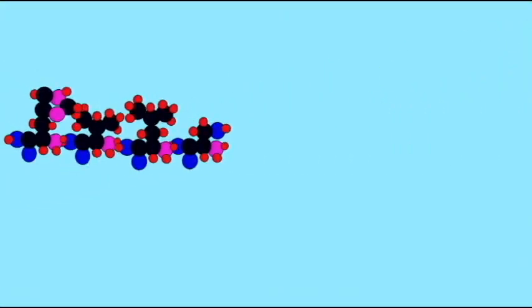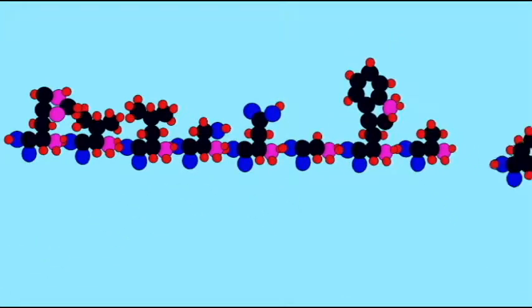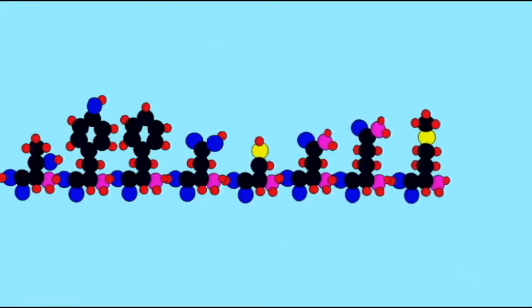These could be short chains. Oxytocin, for example, is simply eight amino acids in a row. Growth hormone is more than 190 amino acids in a row, while thyroid-stimulating hormone can be thousands of amino acids. And so chains of amino acids can represent hormones.